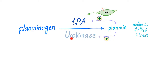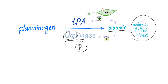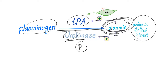What else? Urokinase — 'ase' means an enzyme, a kinase that plays with a phosphate, and 'uro' because it was isolated from human urine. Now we have plasmin, and plasmin, acting in its self-interest, is going to activate TPA to produce more plasmin, and it's going to activate urokinase to convert plasminogen into plasmin, producing more plasmin. This is called acting in your self-interest.